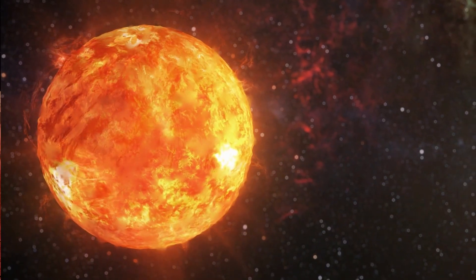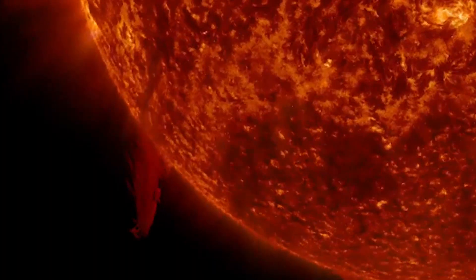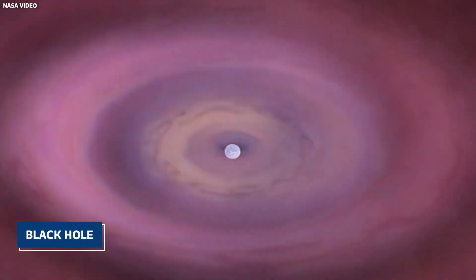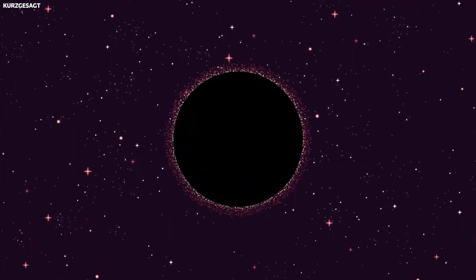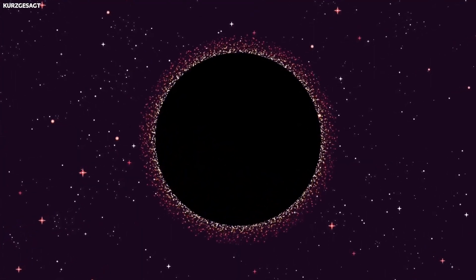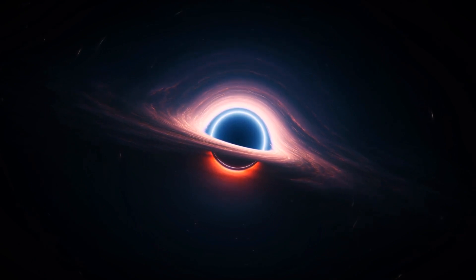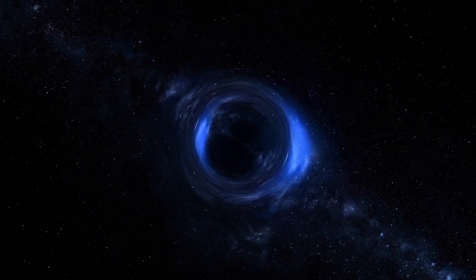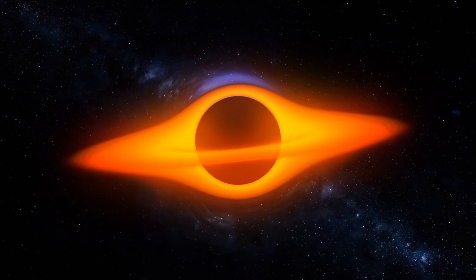On the other hand, if the core's mass exceeds this threshold, Betelgeuse's destiny is even more dramatic. It will collapse under its own gravity, forming a black hole, a region of space-time where gravity is so intense that nothing, not even light, can escape its clutches. Black holes are among the most mysterious and captivating objects in the cosmos, and although they are invisible due to their intense gravity, their presence can be detected by their effects on nearby objects and light.